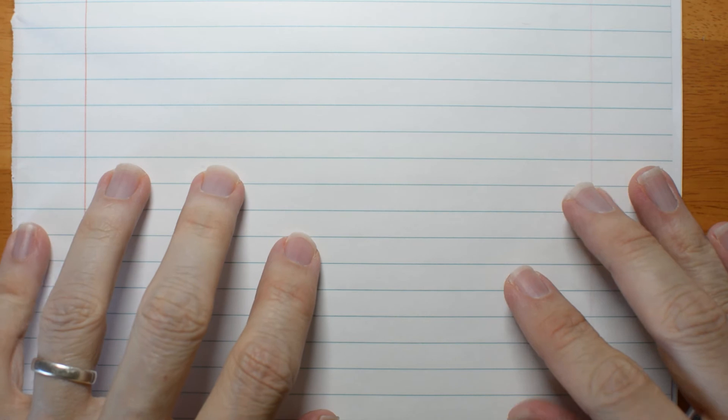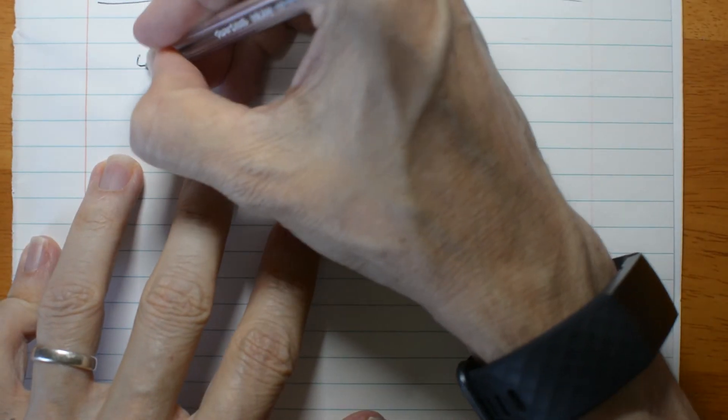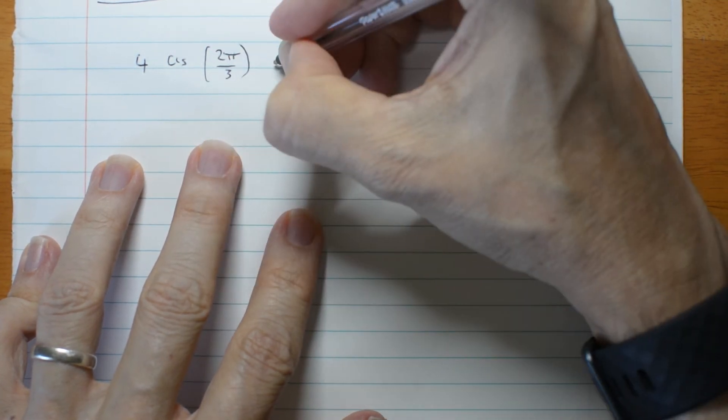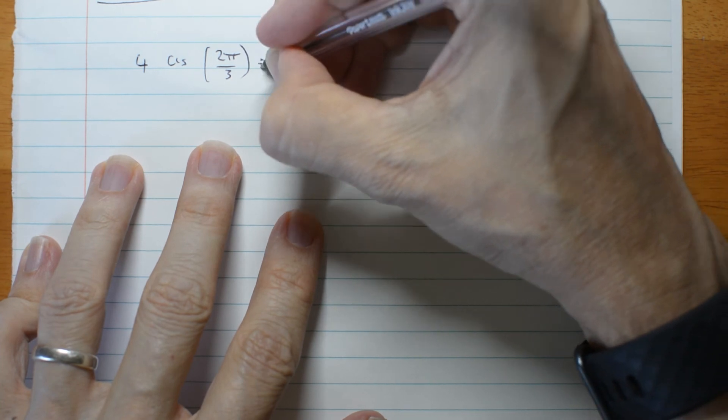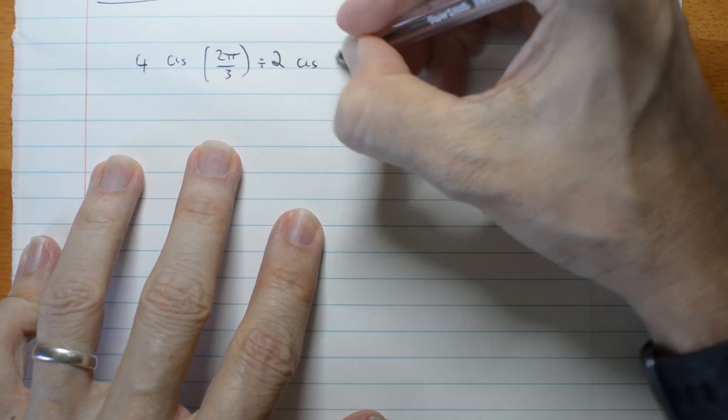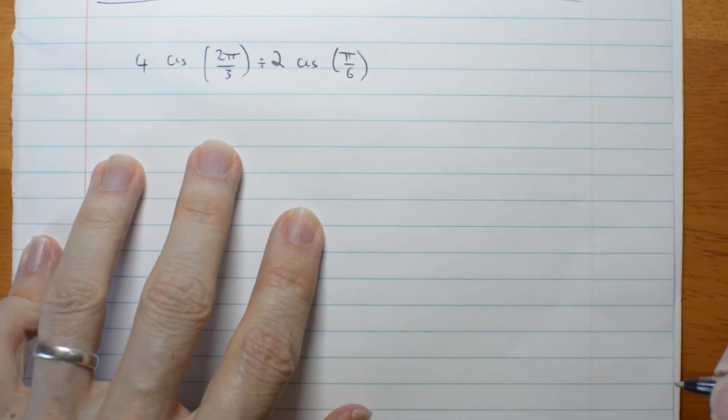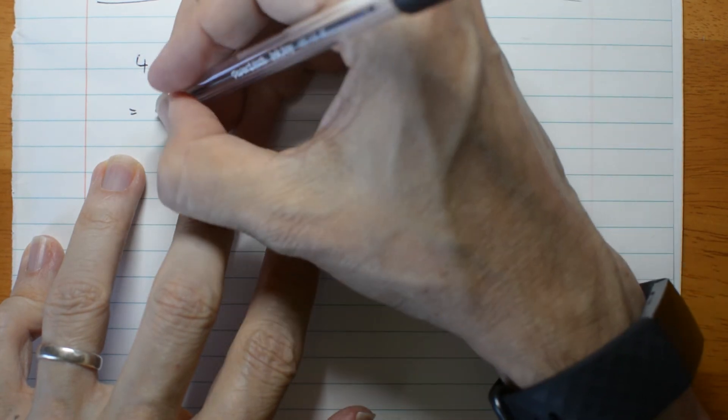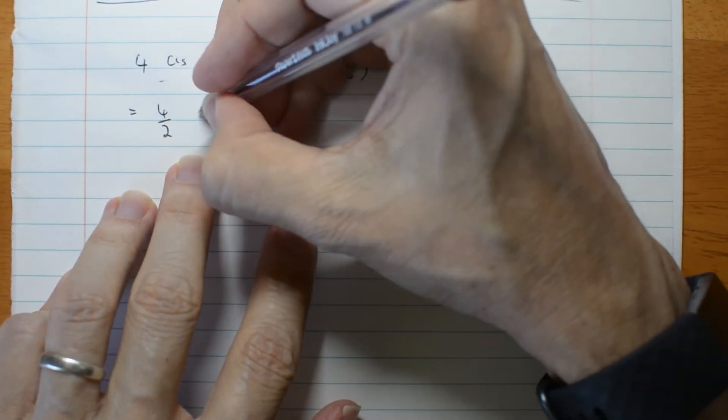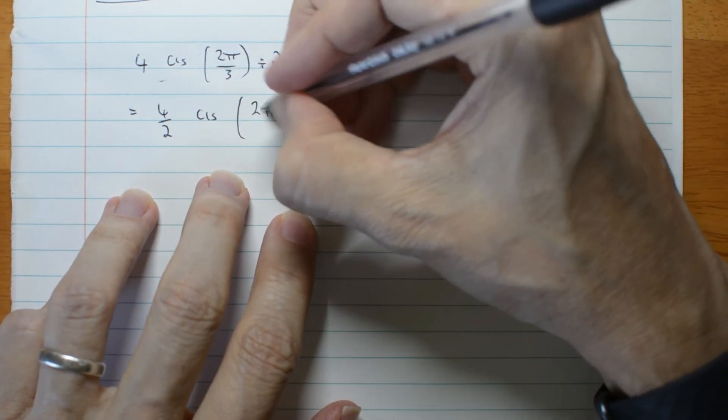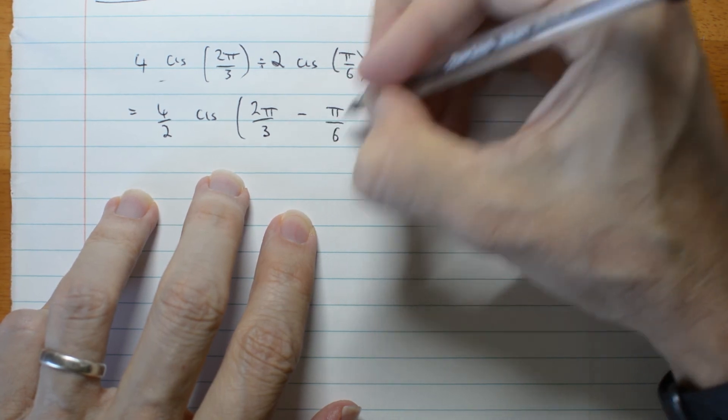Let's try a division. 4 cis 2π/3 divided by 2 cis π/6. OK, so we're going to divide the moduluses, 4 over 2. I'll actually write it, even though I probably don't need to. And subtract the arguments. 2π/3 minus π/6.